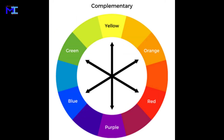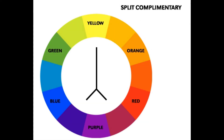Complementary scheme: there are six pairs of colors that are directly opposite each other on the color wheel. They are yellow and purple, orange and blue, red and green, yellow-green and red-purple, blue-green and red-orange, and blue-purple and yellow-orange.